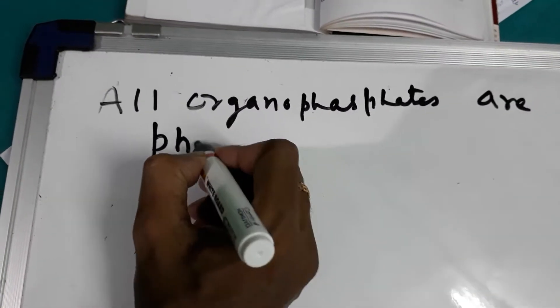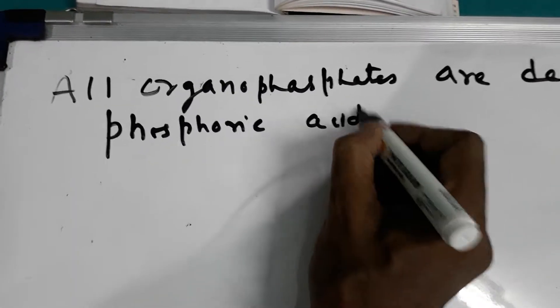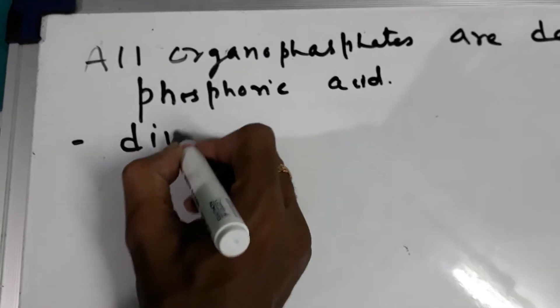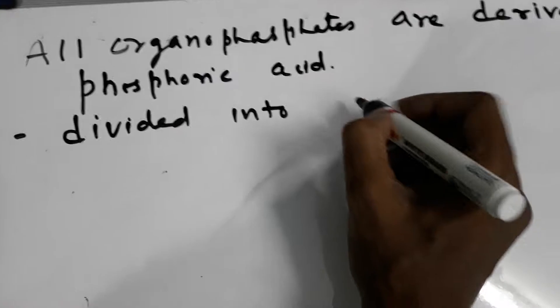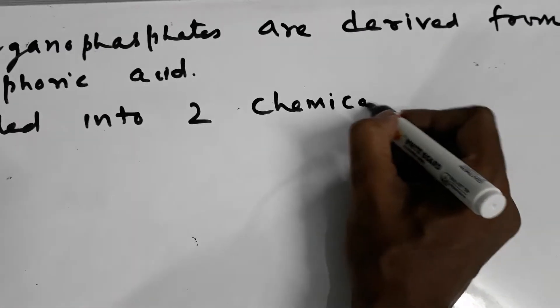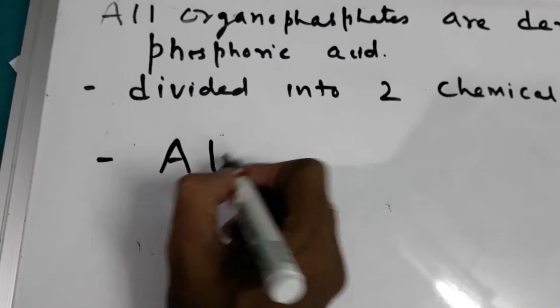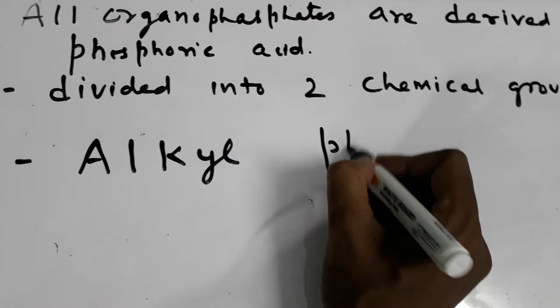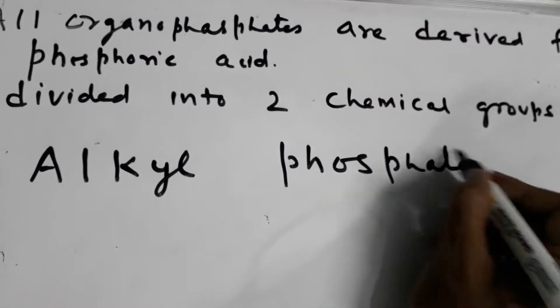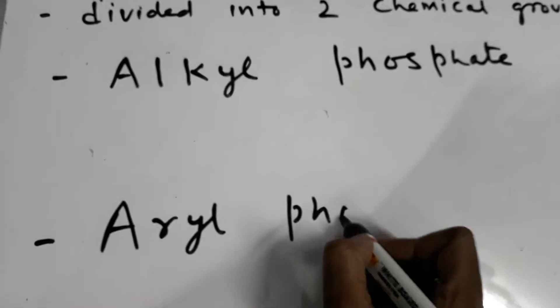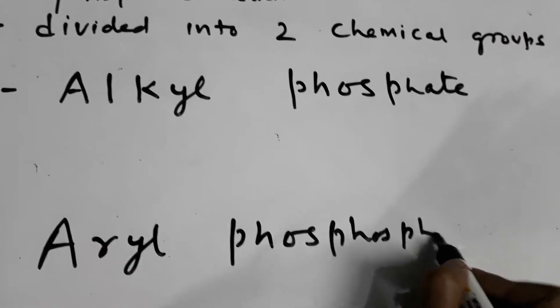All organophosphates are derived from phosphoric acid, divided into two chemical groups. First is Alkyl-phosphate and second is Aryl-phosphate.